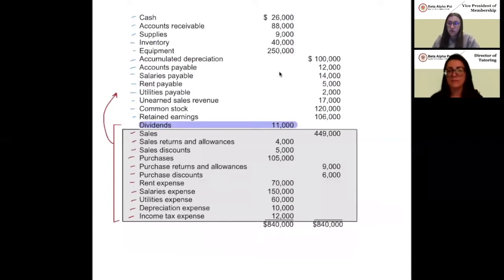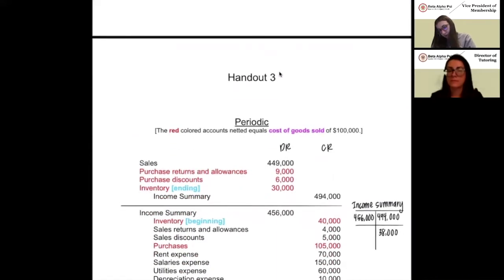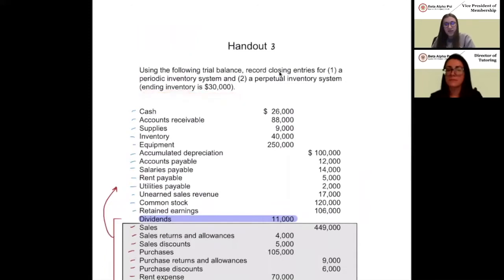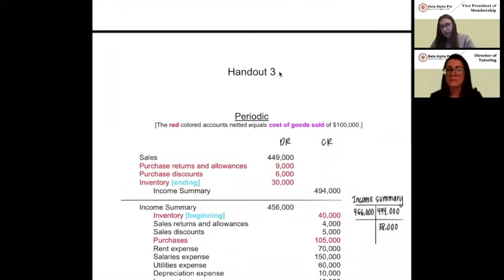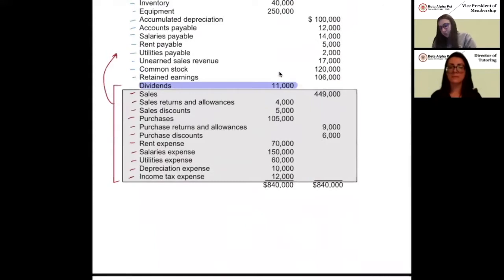First, let's look at what we need to debit to close out. That's going to be sales, purchase returns and allowances, and purchase discounts, because they all have a normal credit balance. In our first entry, we debit sales, purchase returns and allowances, purchase discounts, and also our ending inventory — because that's what we have at the end of the year. To close that all out, we credit our income summary with the total of those numbers.